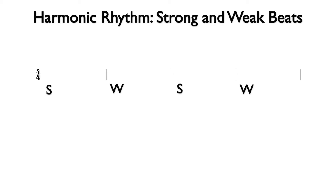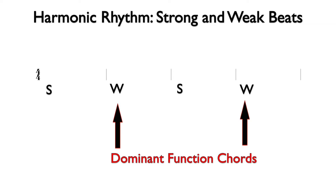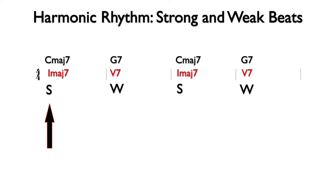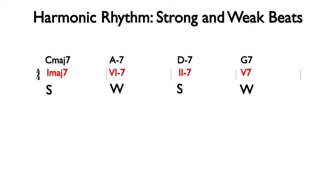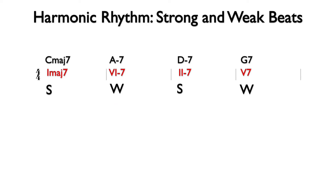When composing a chord progression, dominant function chords typically fall in the weak position. Here is a simple chord progression with the dominant chords in the weak position. Here is another common chord progression with the dominant chord in the weak position. Notice that other chords can fall in the weak position as well, but when dominant chords are used, they will typically fall in the weak position.